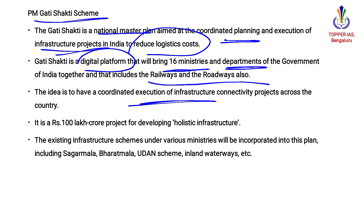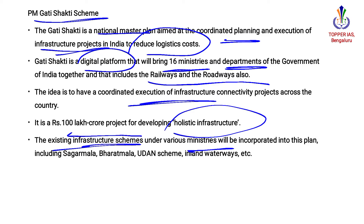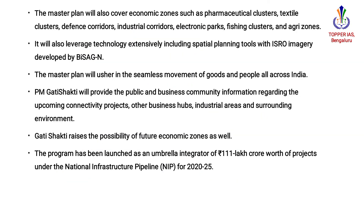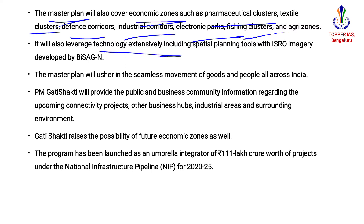The scheme plans to take up 100 lakh crore projects under holistic infrastructure. Existing infrastructure schemes under various ministries will be incorporated into this plan, including Sagarmala, Bharatmala, UDAN Scheme, and inland waterways. This master plan also covers economic zones such as pharmaceutical clusters, textile clusters, defense corridors, industrial corridors, electronic parks, fishing clusters, and agri zones.